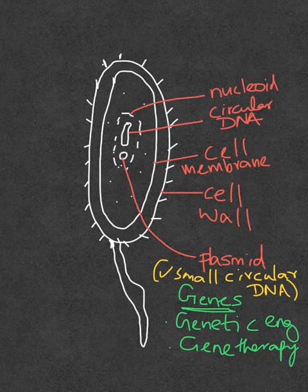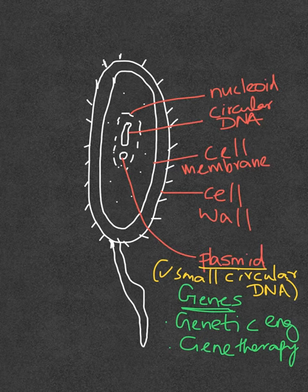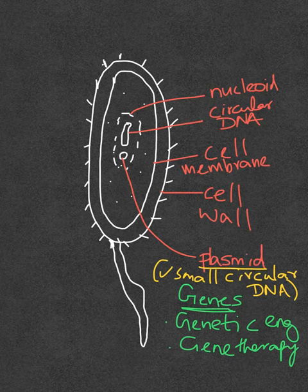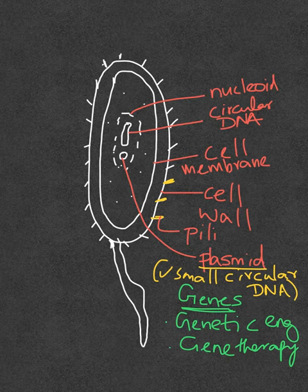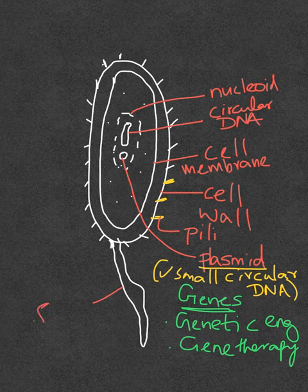The plasmid DNA are also capable of replication, and this replication can be passed down to nearby prokaryotes by means of these halic appendages here, which are known as the pili. And some prokaryotes also contain flagella.